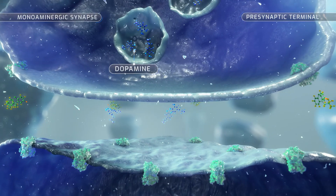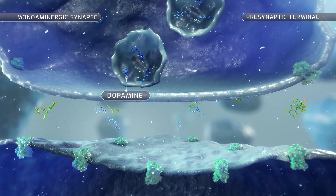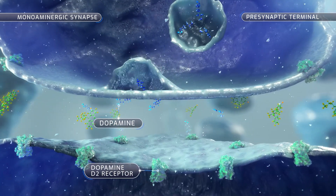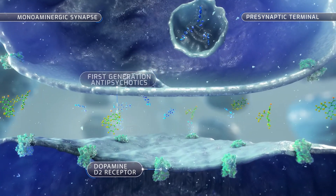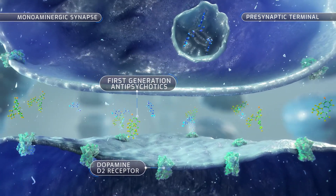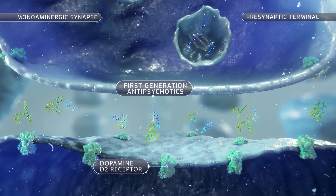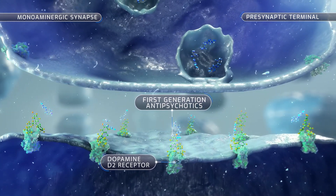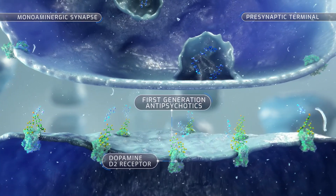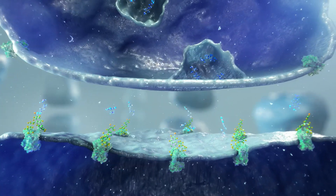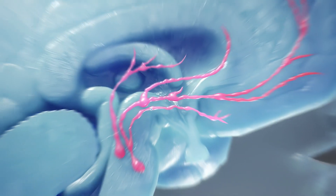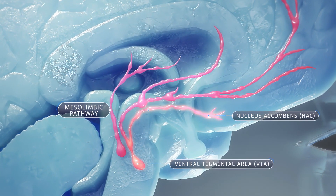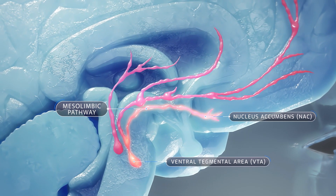Antipsychotics represent the pharmacological standard of care and act on dysregulated dopamine signaling mainly by targeting postsynaptic dopamine D2 receptors and attenuating D2 signaling along the mesolimbic pathway, thereby reducing positive symptoms.